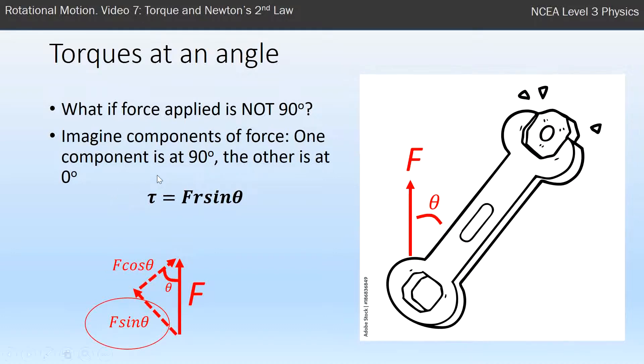From that we change our torque formula. Instead of it being F times R, it's now F times R times sin θ. So this is the formula if something's not at 90 degrees.